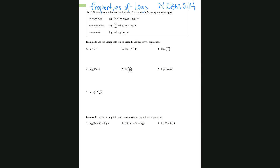So we have here three of the rules that we are going to be using. Sometimes I like to refer to them as properties — some books do that, some books call them rules. So we have here the product rule, quotient rule, and power rule.